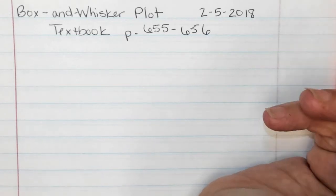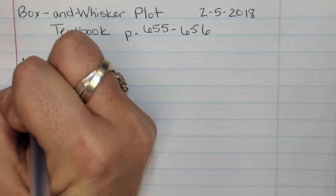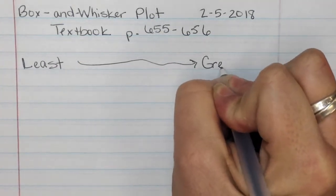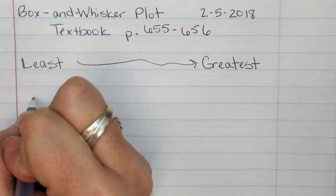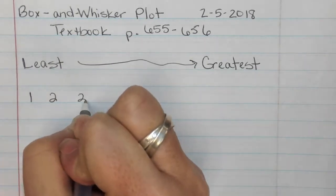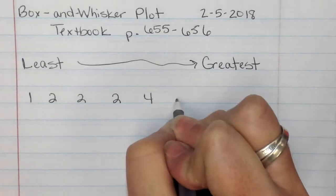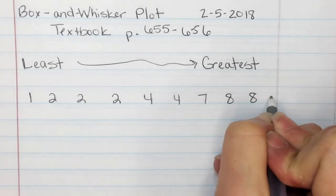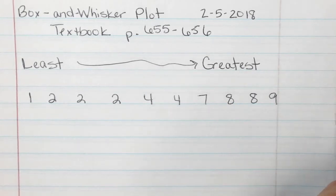So first, just like last week, the first thing you would do with your data is write it from least to greatest. I'm going to go ahead and put it in order for you, so the numbers are: 1, 2, 2, 2, 4, 4, 7, 8, 8, 9. There's no special reason for those numbers, that's just the numbers I chose.